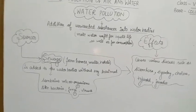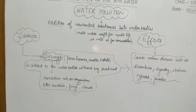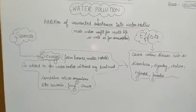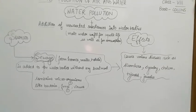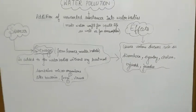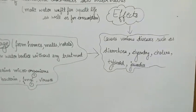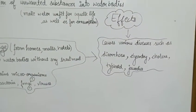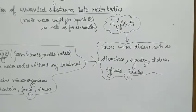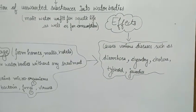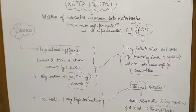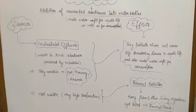As sewage is added to any fresh water source, we cannot use that water for any other thing. The microorganisms present in sewage cause various diseases such as diarrhea, dysentery, cholera, and typhoid. Let's look at the next source responsible for water pollution.